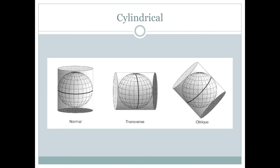The reason we might want to use these different map projections is because distortion is going to be minimized along those darker contact lines. For example, the normal cylindrical map projection works well for mapping something near the equator oriented east-west. If we had something long and oriented north-south, like the country of Chile in South America, we might want to use a transverse map projection. And if we had something that didn't quite line up along latitude or longitude, like the Aleutian Islands, we might use the oblique map projection.